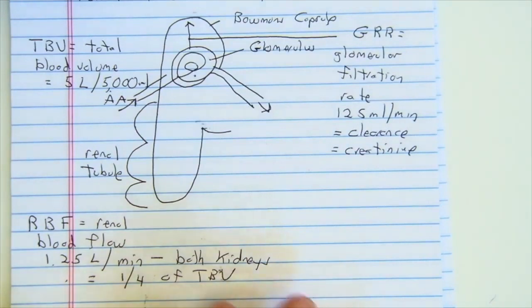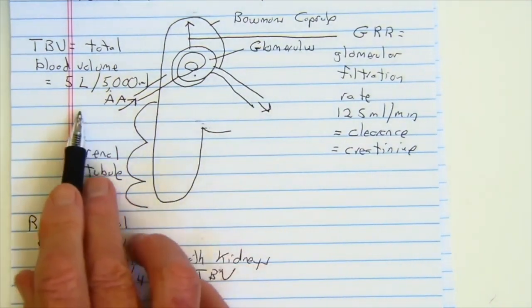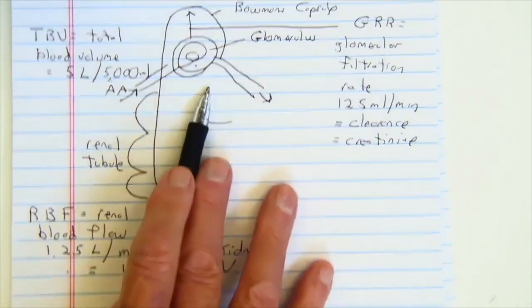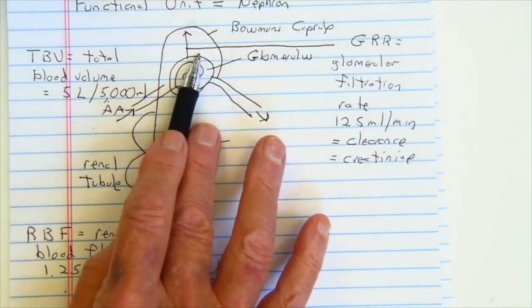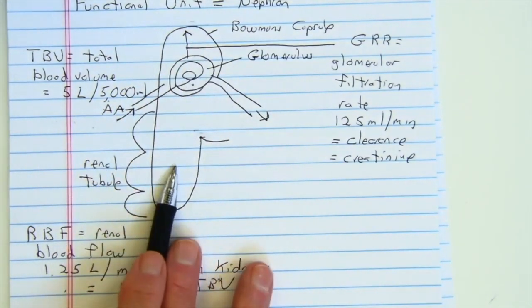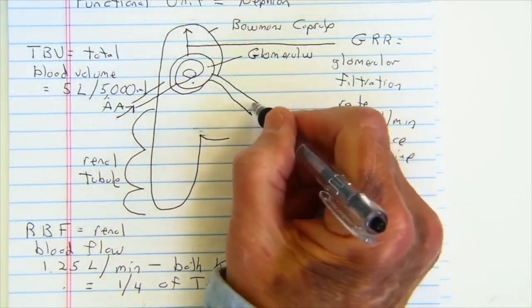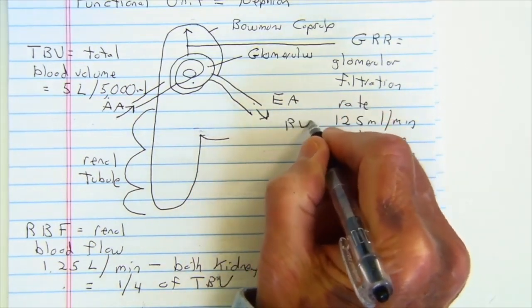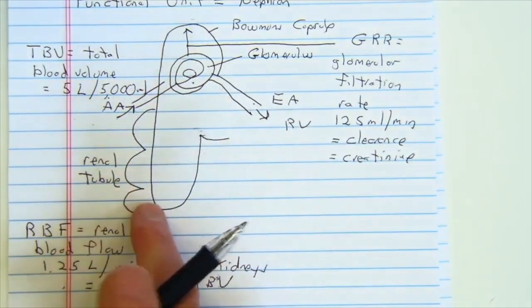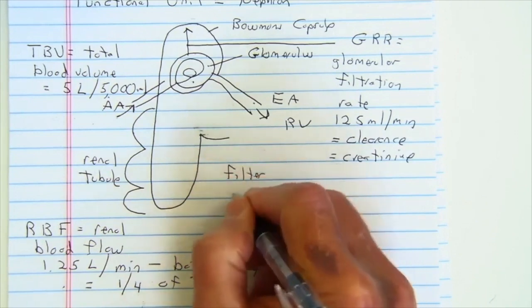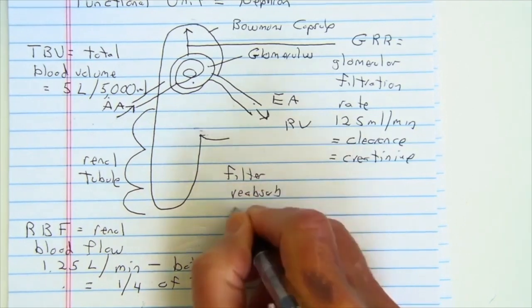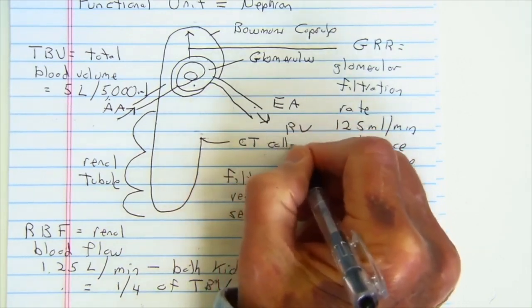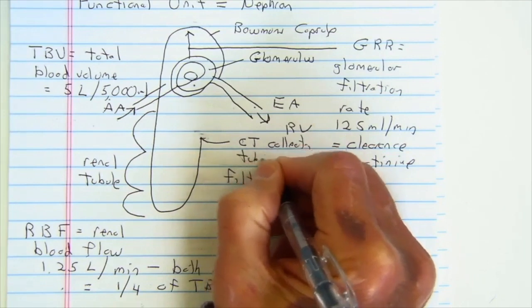So the big picture is: the renal artery brings blood in through millions of afferent arterioles into a ball of capillaries producing filtrate. That filtrate passes through the series of renal tubules. What doesn't become filtrate comes out through the efferent arteriole (EA) and passes into the renal vein. In the renal tubule we filter, reabsorb, and secrete, and it's not until we get to the collecting tubule (CT) that we actually produce urine.